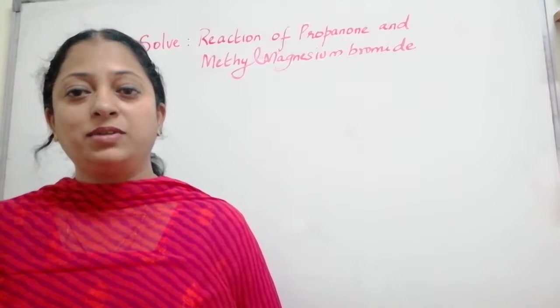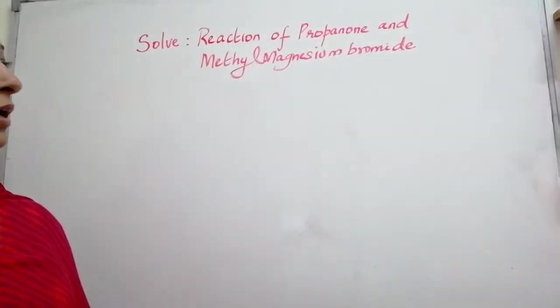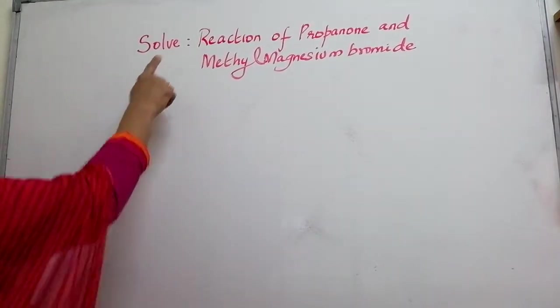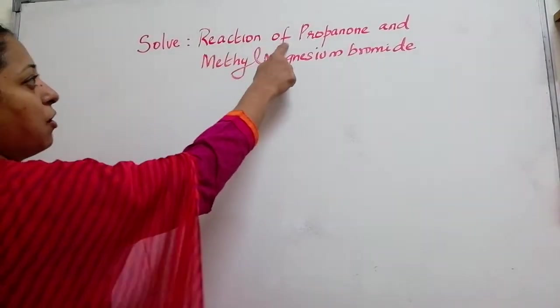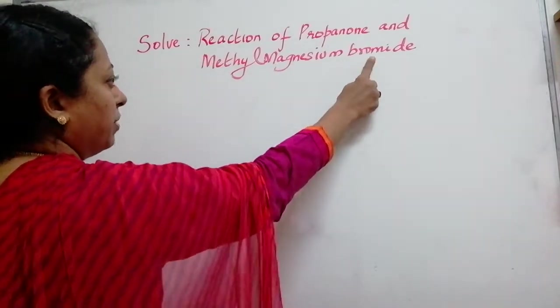Students, we have the next topic in the chapter alcohol, phenols and ethers. The topic is: Solve, Reaction of Propanone and Methyl Magnesium Bromide.